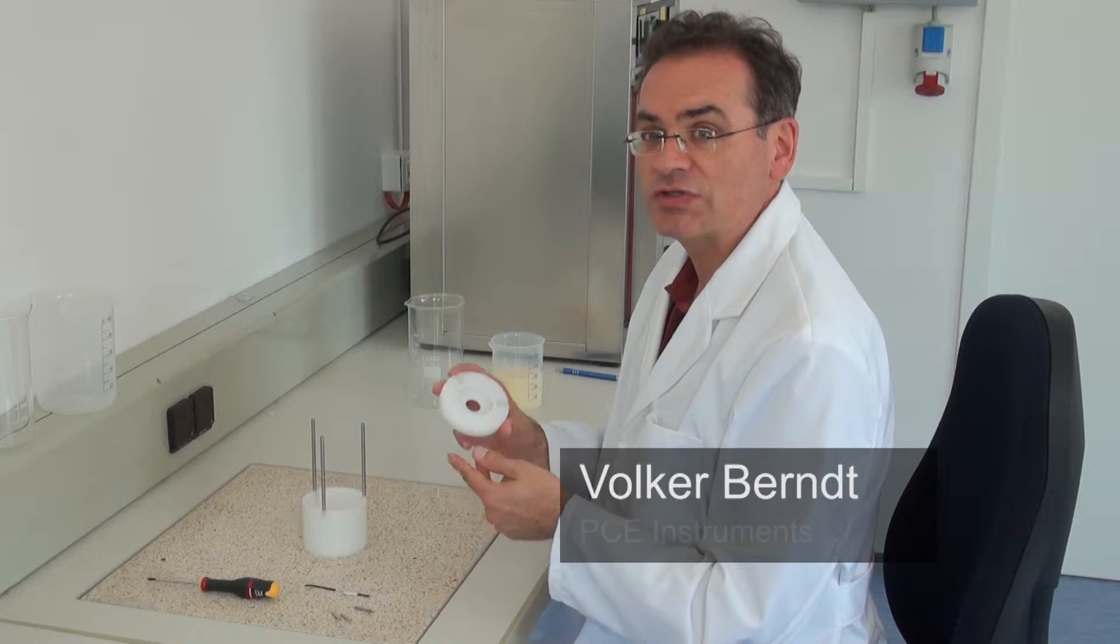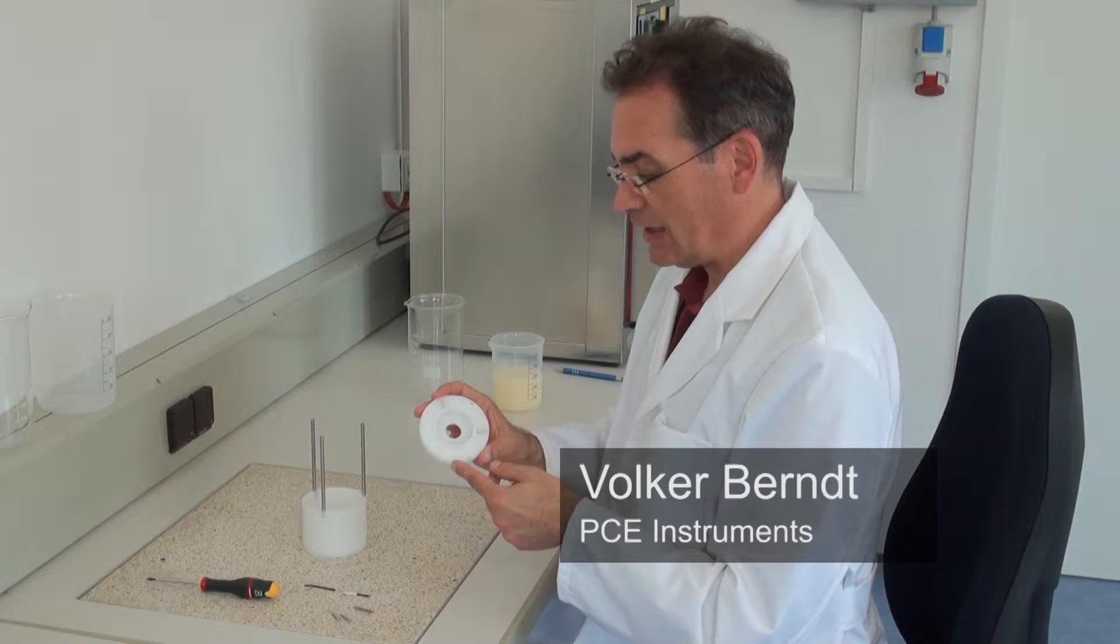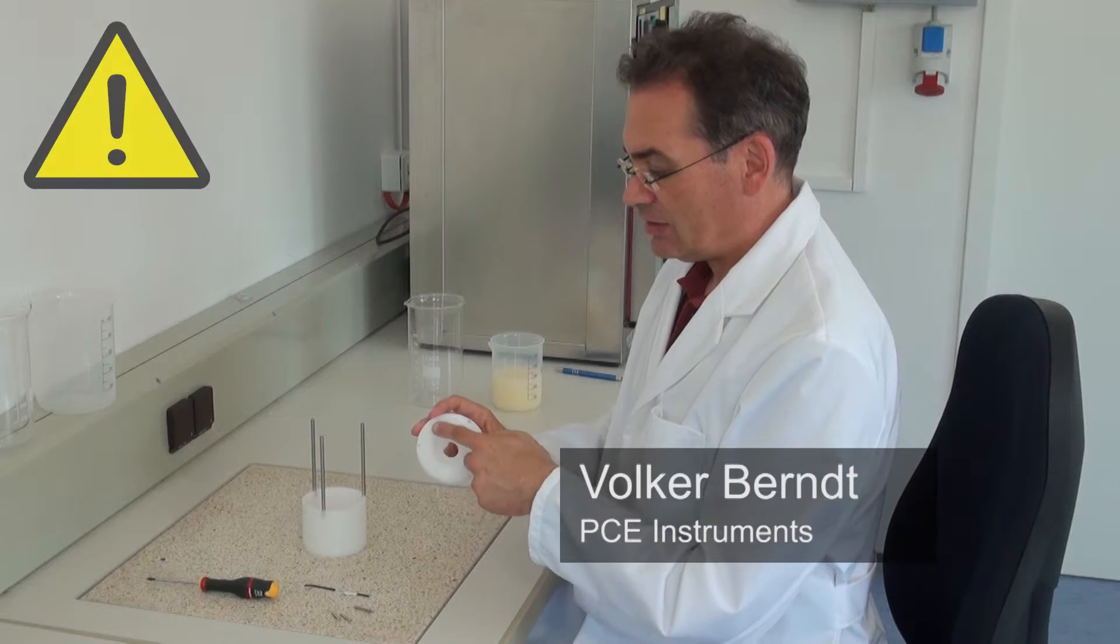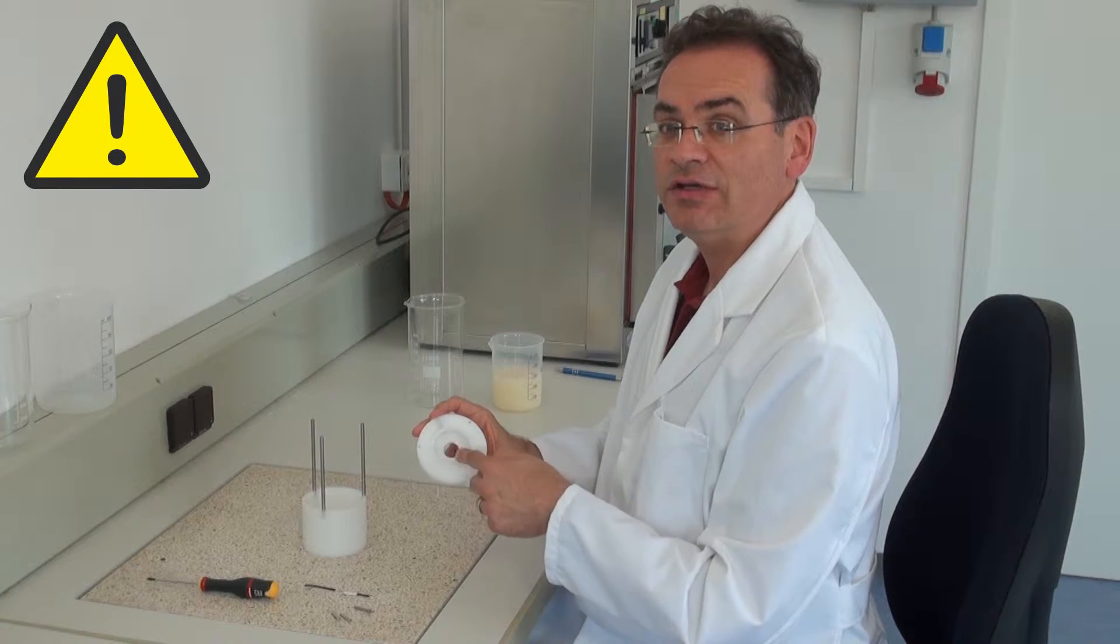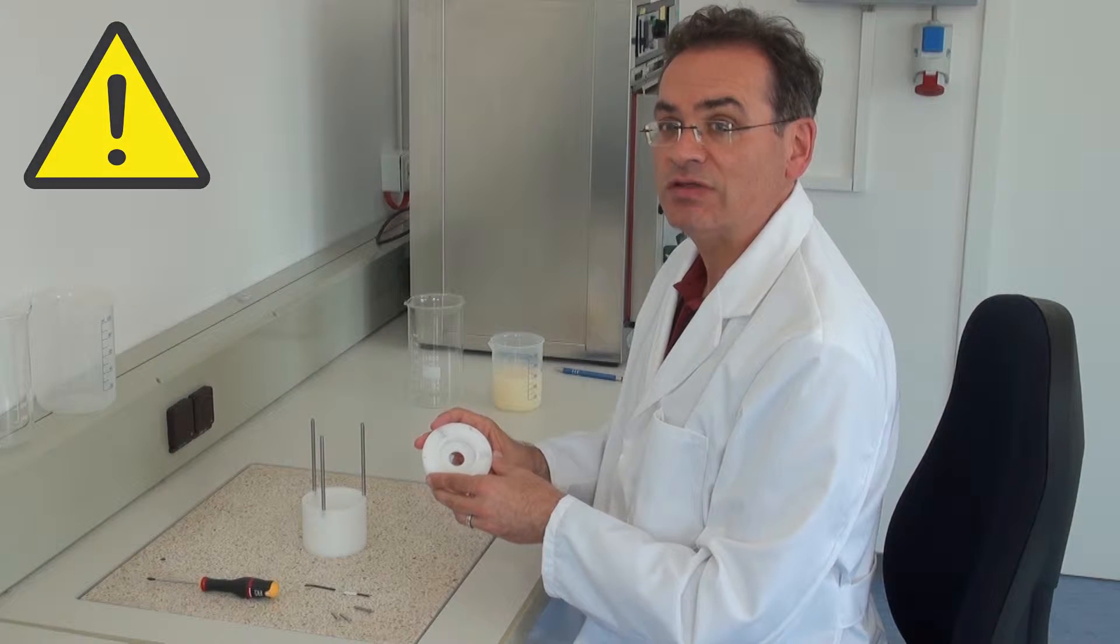Now the lid of the protection cage is screwed on. Here is to watch that the groove of the lid shows upwards, because later the viscometer is attached here.